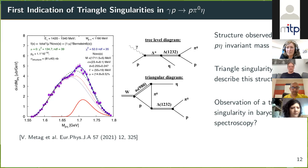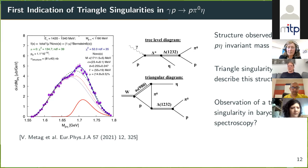A further question asks whether the tree-level contribution — the resonance decaying to a₀(980) proton, with a₀ decaying to π⁰η — is already included in the calculation. Annika confirms she is not exactly sure of the details, as the same code used by the Copper group was provided for the calculation. The questioner notes that even with inelastic channels, cancellations aren't exact but you usually still get a trace of those cancellations. Annika says she would need to ask Folk about how it was done.